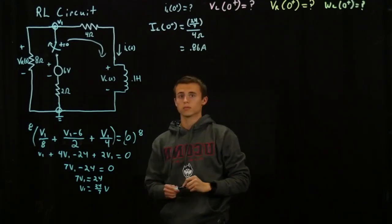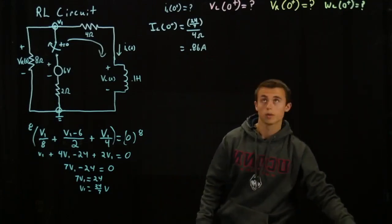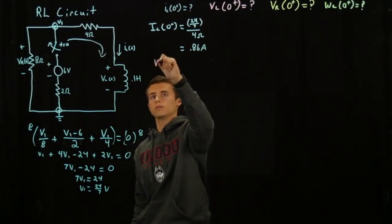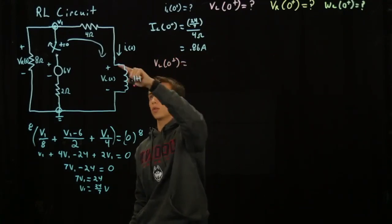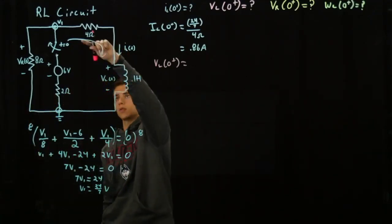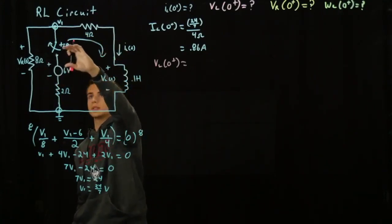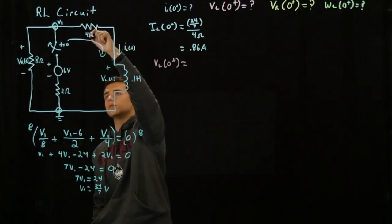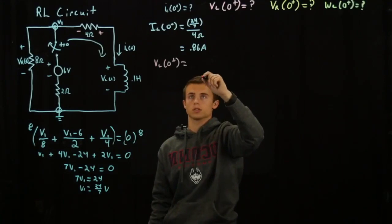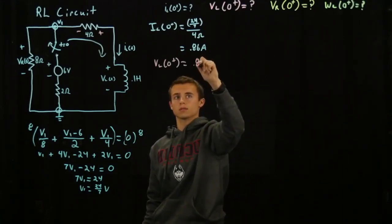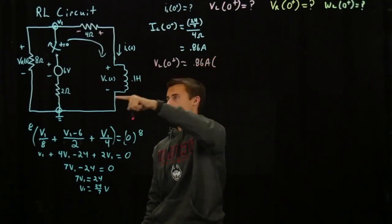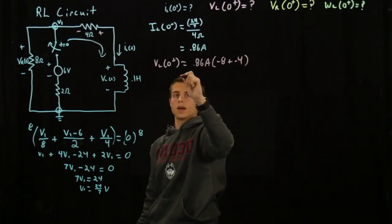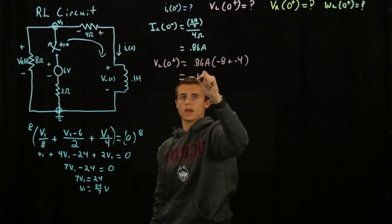So there we have it, we've solved for the current through the inductor and next we're going to be solving for the voltage through the inductor. So in this case V_L is going to equal the current through the inductor at time 0 times the resistance through this loop, which will be the 4 ohm resistor and the 8 ohm. This is a sign convention. So 0.86 amps times negative 8 ohms plus negative 4 ohms, and solving for this I got negative 10.3 volts.